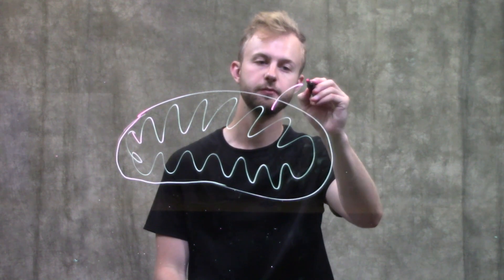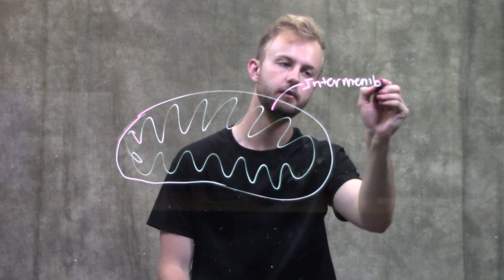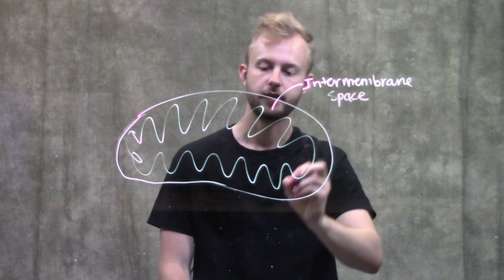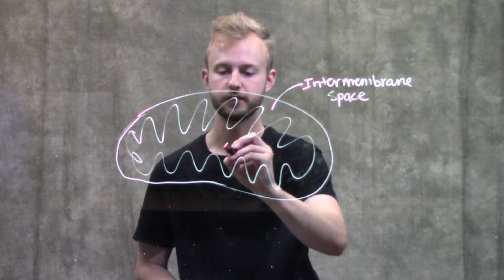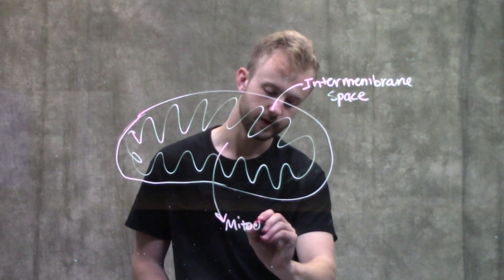The space in between these two membranes is called the intermembrane space. It's pretty easy to remember. And then the inside of this compartment that's created by that second membrane is the mitochondrial matrix.